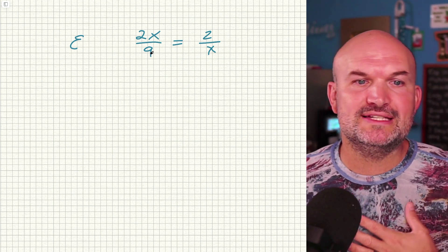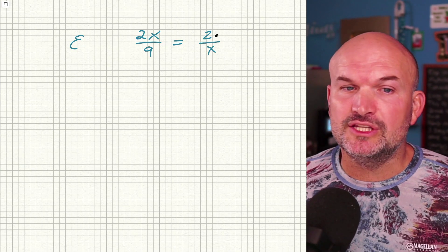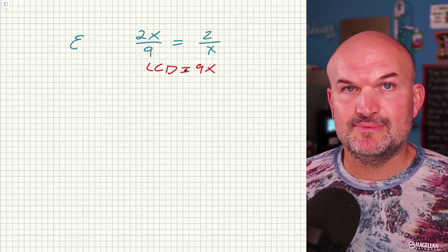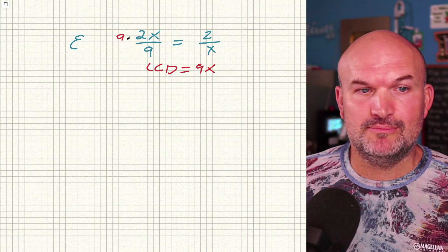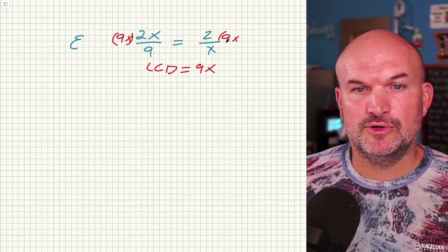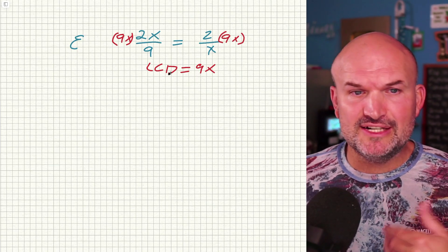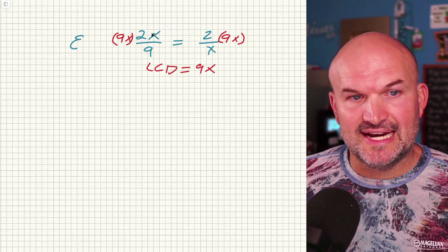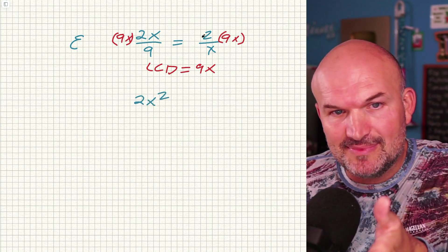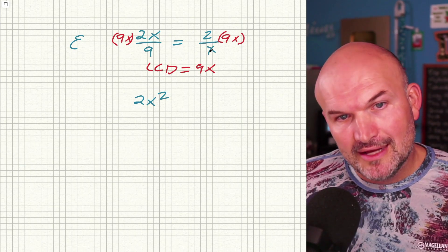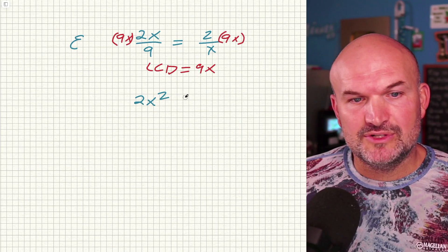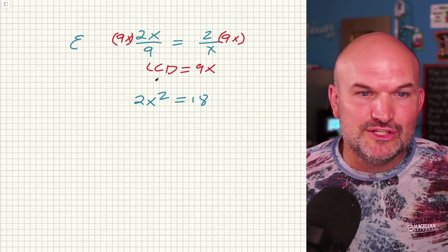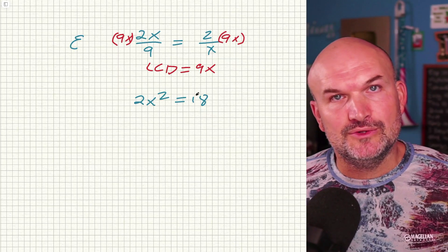What is the smallest number, term, or expression that my denominators are evenly going to divide into? I have a nine and an X. The LCD in this case is simply going to be nine X. So what I'm going to do to get rid of my denominators is multiply everything by nine X. Nine evenly divides into nine one time, leaving me with an X times two X, giving me two X squared. My X's divide out, leaving me with two times nine, which equals 18. I know cross multiplication is faster, but I'm showing you the LCD process because that's exactly what we'll need for the next two examples.